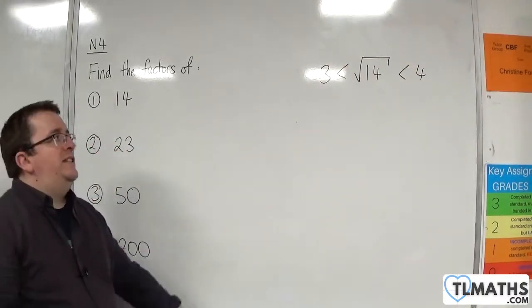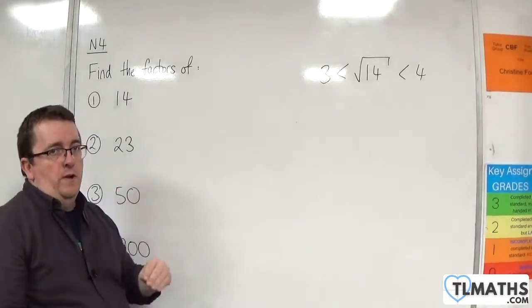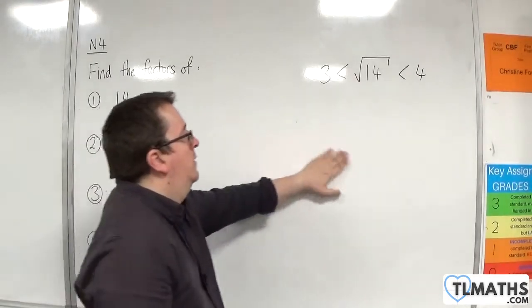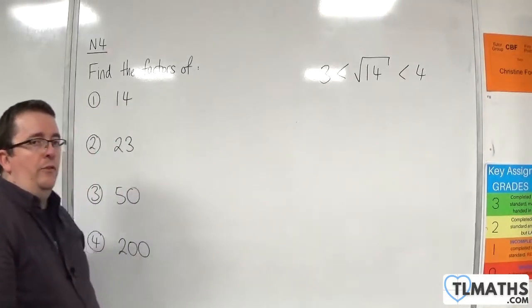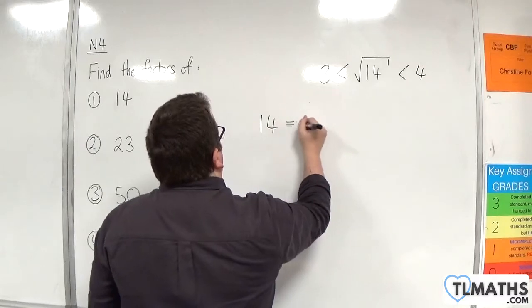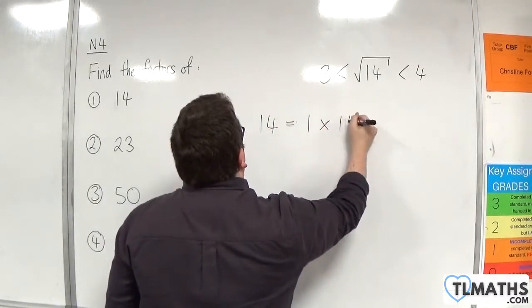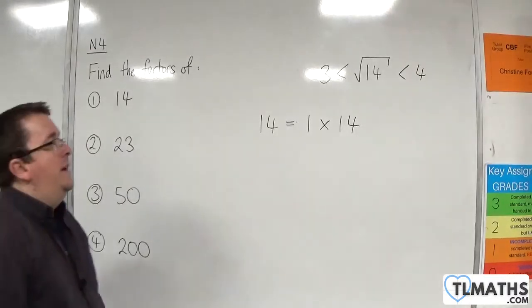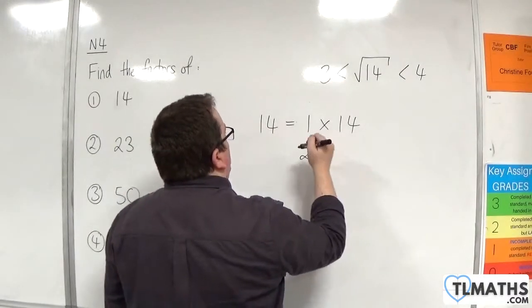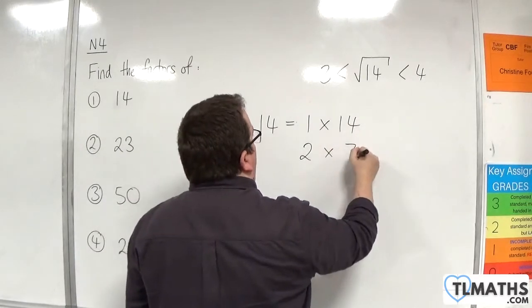So, I don't need to go anywhere further than 3 in finding my factors when I lay it out in the way that I showed in the previous video. So, 14, first of all, is equal to 1 times 14. And then, I increase this by 1, and I get 2. 2 goes into 14 7 times.